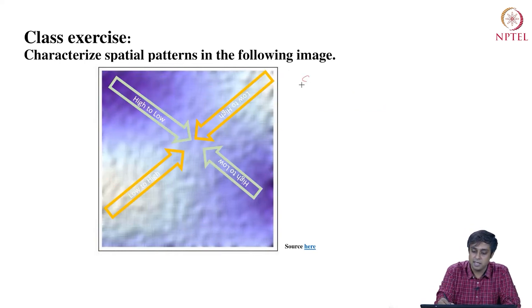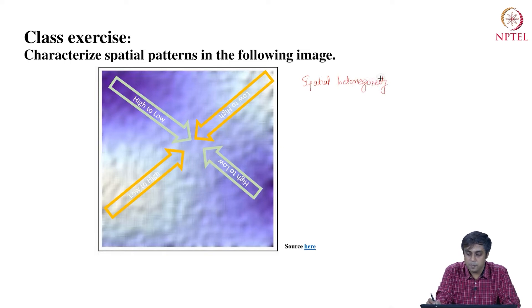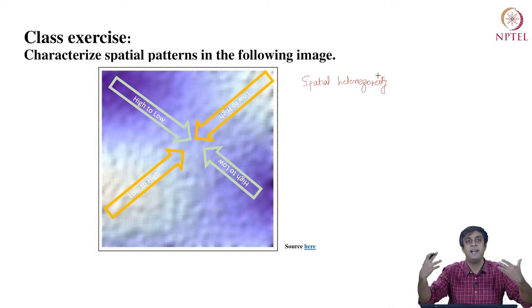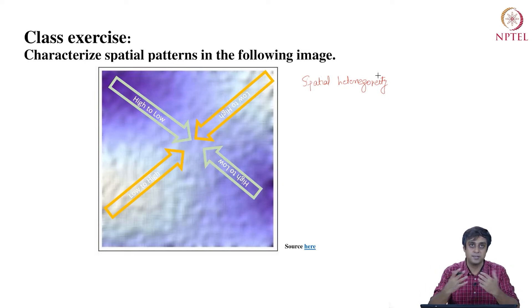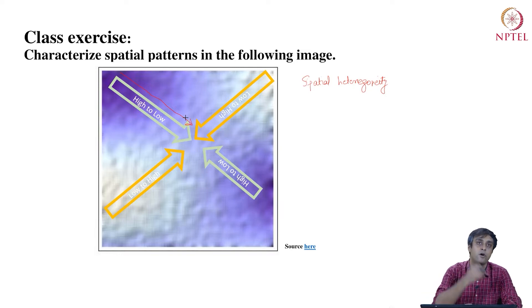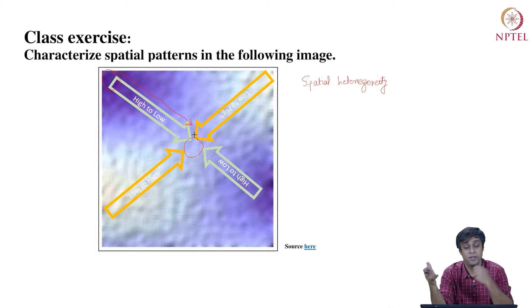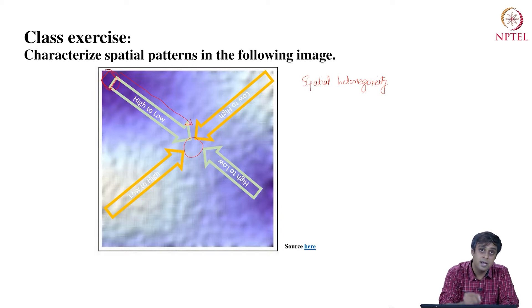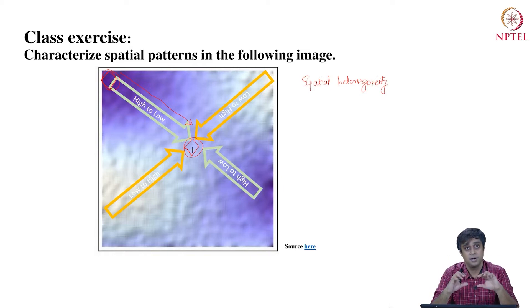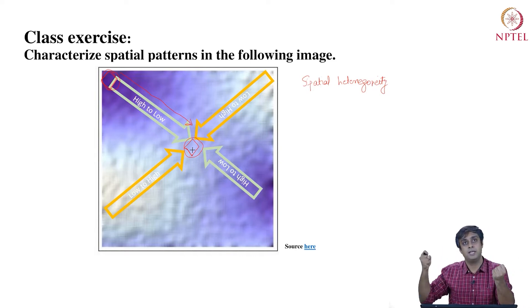The second pattern this image exhibits is spatial heterogeneity. Spatial heterogeneity is about spatial trends, so we should be able to see a trend of how values are moving in space. Starting from the northwest corner and moving to the center of mass of the image, we are moving from high values to low values — from clusters of high values to clusters of low values. This is a trend in space, which we define as spatial heterogeneity.